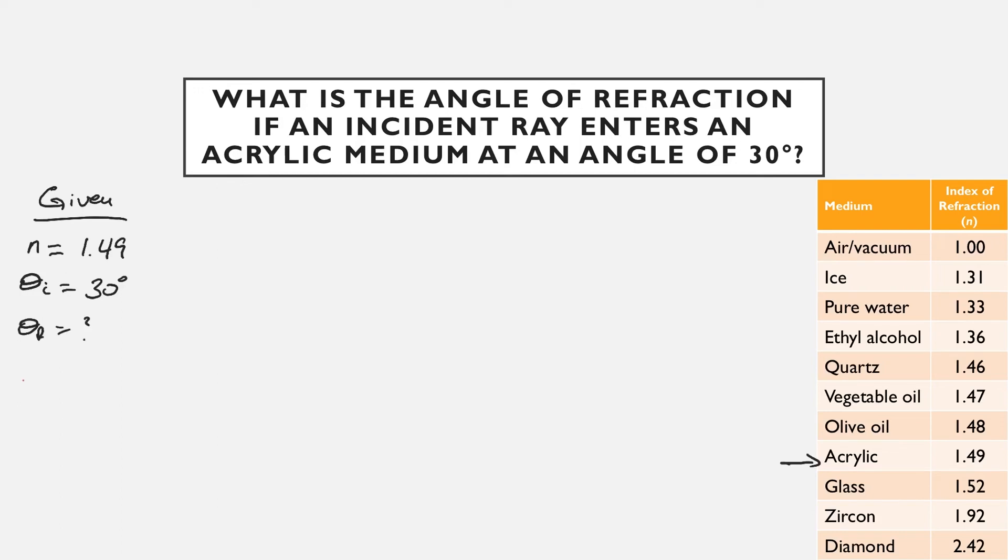So recall that our equation is n equals sine theta i over sine theta r. We can't use this one as it's written. We're going to have to rearrange it. If I rearrange this, I end up with sine theta r equals sine theta i over n. We're actually not quite done with that, but we're going to do that in another step later on. So let's rewrite our equation. Sine theta r equals sine theta i over n. Plug in everything we know.